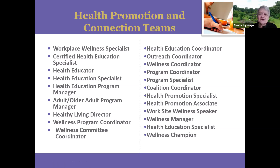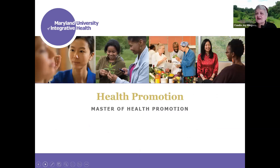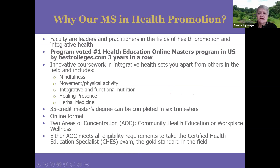There are certainly a lot of different job titles you might look for when searching for a job, and many different fields. The program is a 35-credit master's degree that can be completed in six trimesters, and it is all online. There are two areas of concentration, and you can sit for the CHES exam no matter which one you choose. We also have very innovative coursework that includes things like mindfulness and movement, integrative and functional nutrition, herbal medicine, and healing presence — things you probably will not get anywhere else.